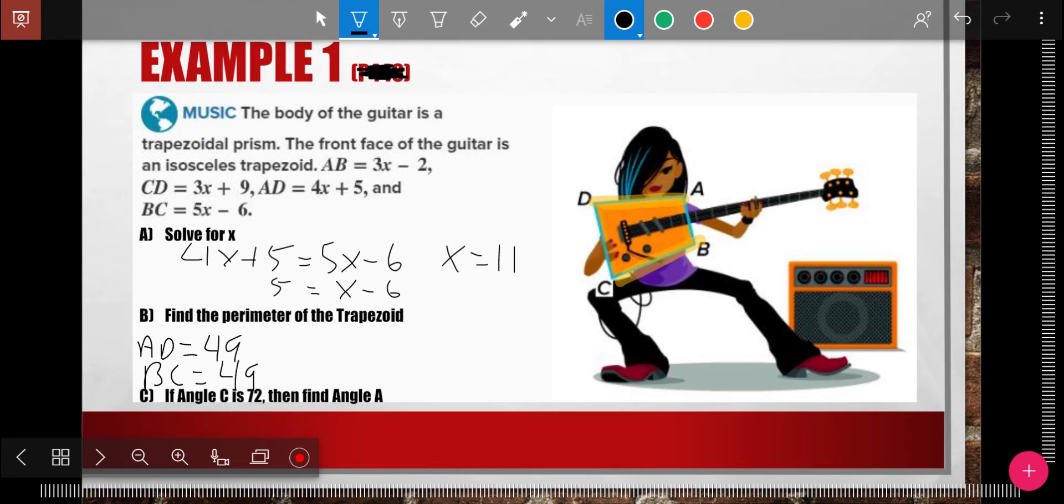Then let's do the other two. So we have AB, and we have CD. AB is 3X minus 2. Plug the 11 in. 3 times 11. 3 times 11 is 33. Minus 2 is 31.